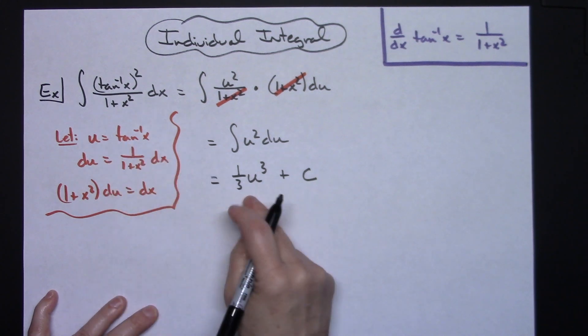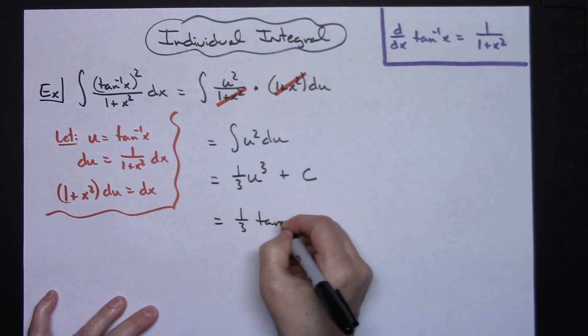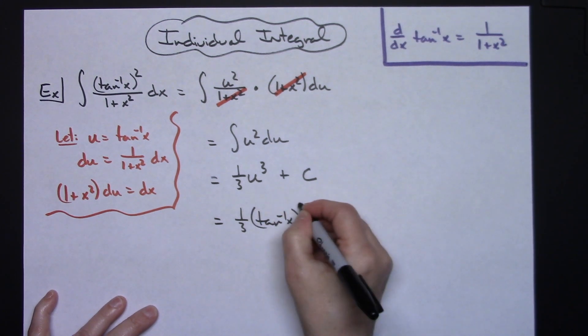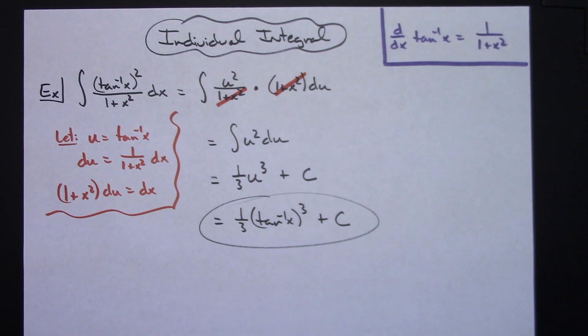I'm going to have one-third times the inverse tangent of x raised to the third power plus C. So definitely a straightforward u-substitution integral.